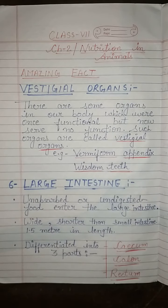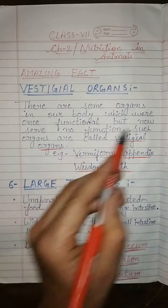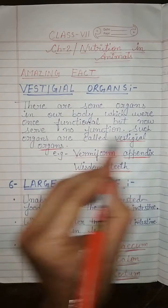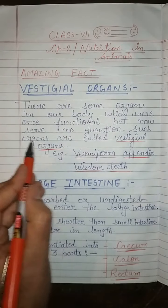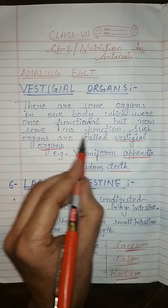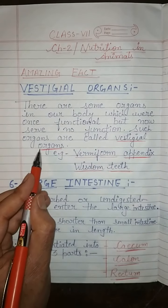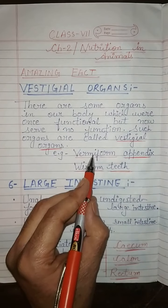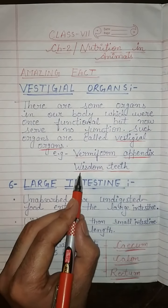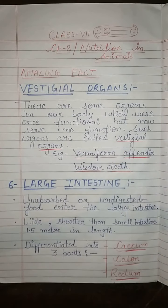That is large intestine. In the amazing fact, the topic is vestigial organs. What are vestigial organs? There are some organs in our body which were once functional but now serve no function at all. Such organs are called vestigial organs. For example, the vermiform appendix and wisdom teeth.